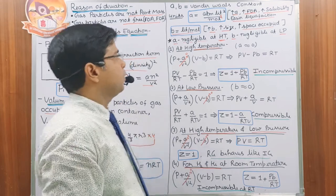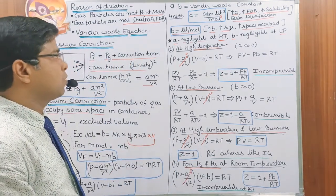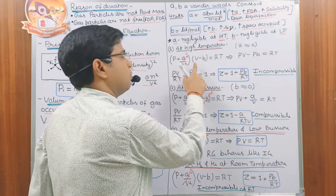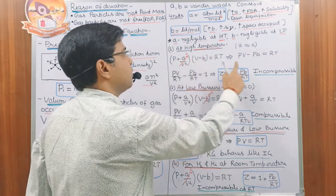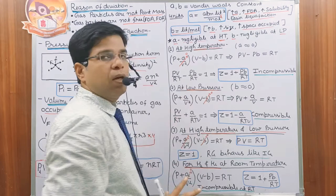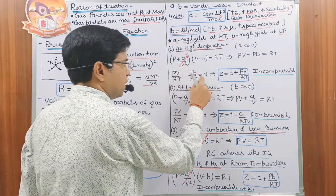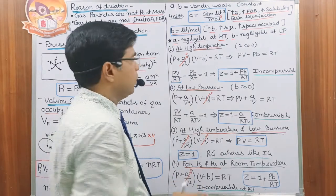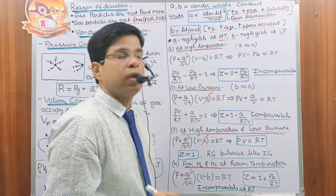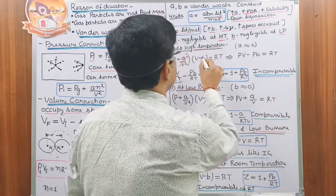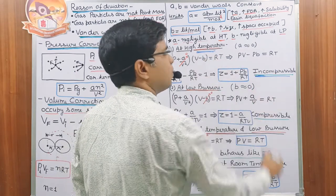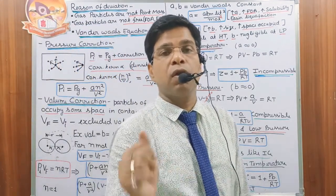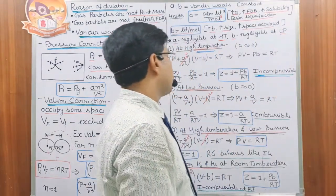At high temperature, we can neglect 'a'; at low pressure, we can neglect 'b'. At very high temperature, 'a' ≈ 0, so the Van der Waals equation becomes P(V − b) = RT, giving pv − pb = RT. Dividing both sides by RT: PV/RT − Pb/RT = 1, so Z = 1 + Pb/RT. Under this condition, the gas is incompressible. When pressure is very low, volume of the container is very high, so we can neglect 'b'.